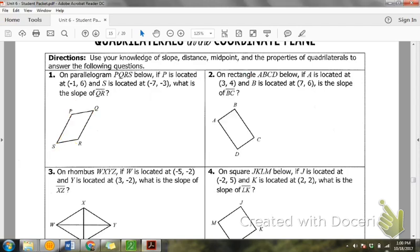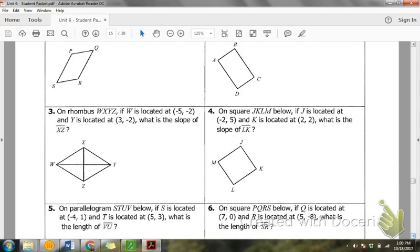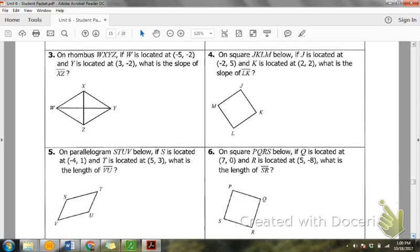It says on rhombus, what does rhombus mean about all the sides? Thank you. They're all the same. So let's go ahead and mark that since we know that to be true. We may or may not need that, but it's good to mark it. In rhombus WXYZ, W is located at negative 5, negative 2. And Y is located at 3, negative 2.